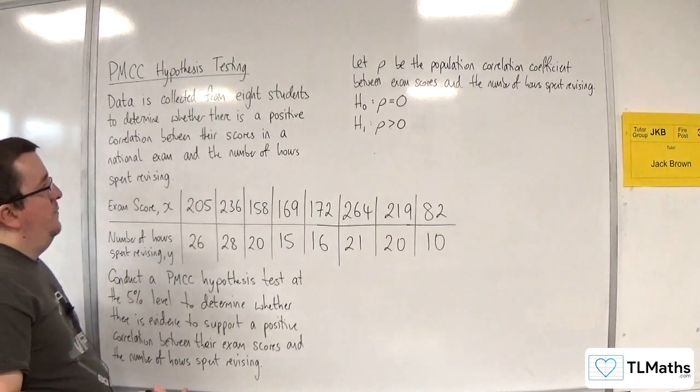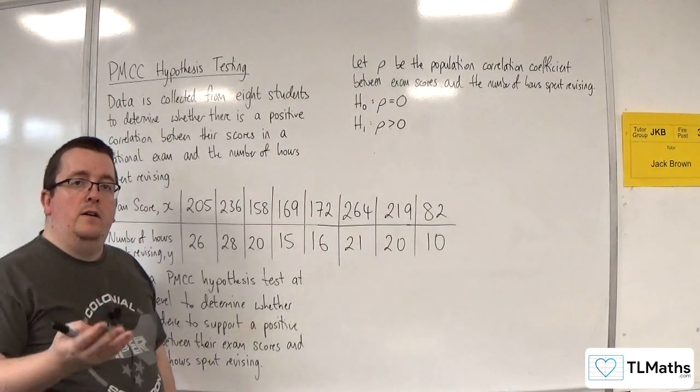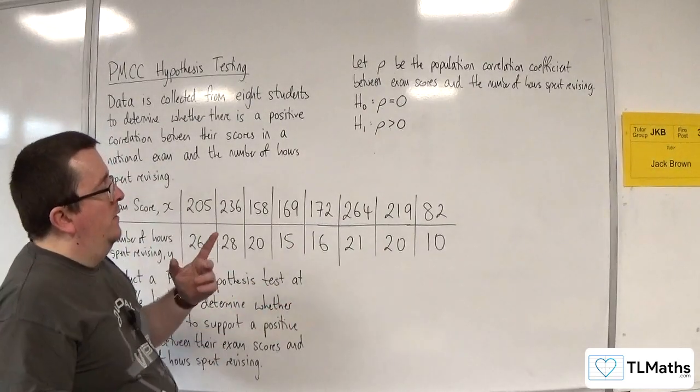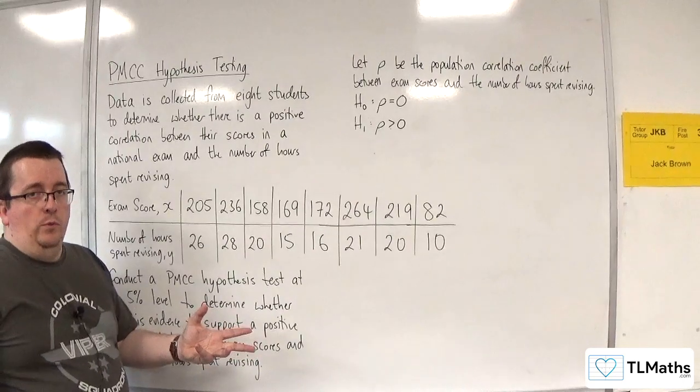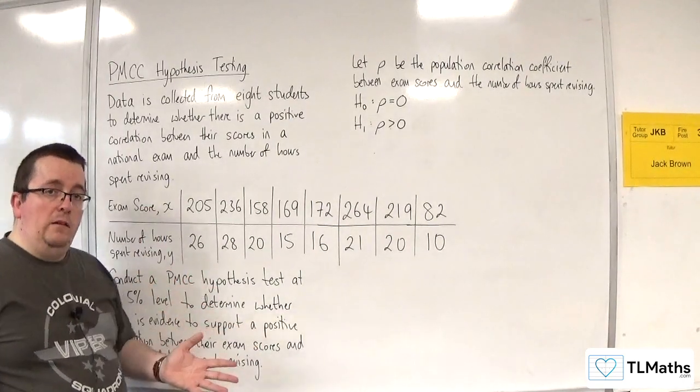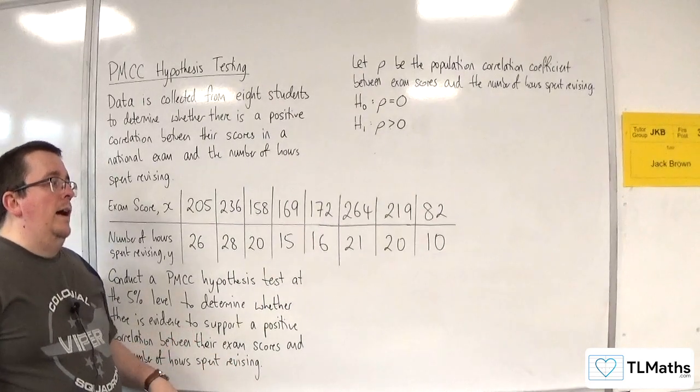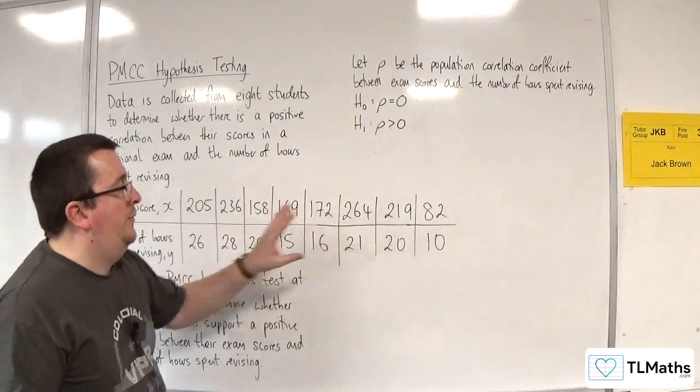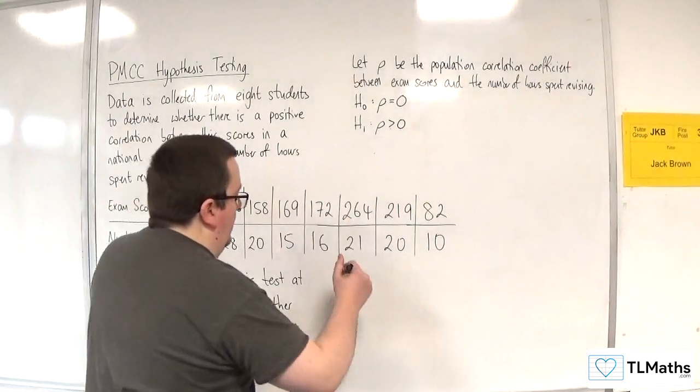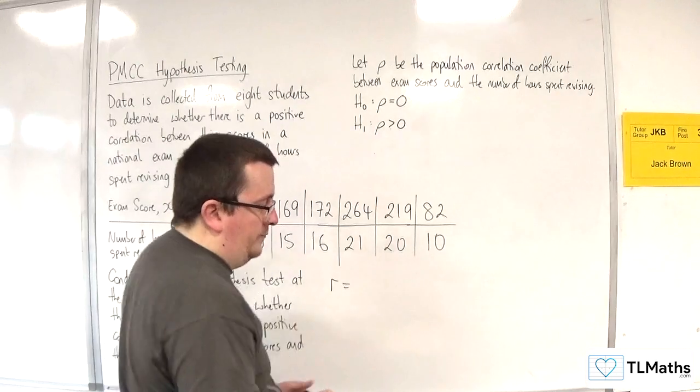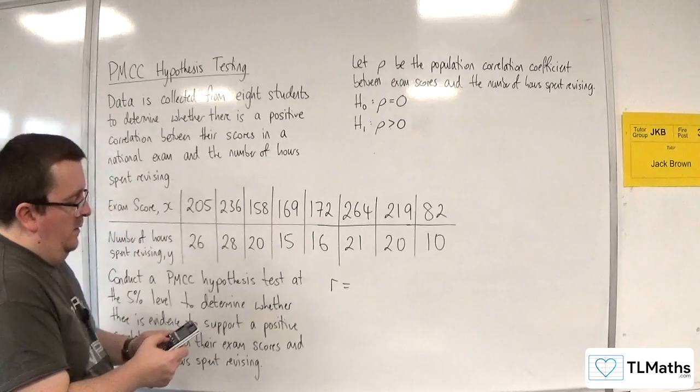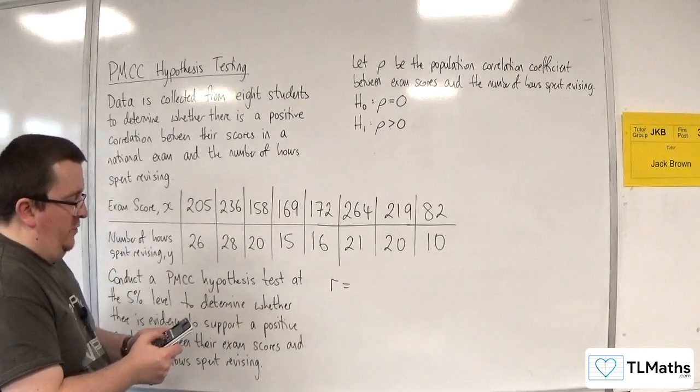The next thing that we need to do is we need to find our value of R. Now, in the majority of exam questions that you will do and see, the value of R might be calculated in part A. And you might not have it like this. It might just be done with summary statistics. So let's find R, and we're going to do that straight on the calculator.